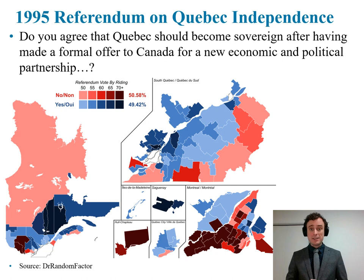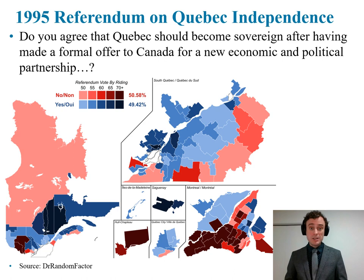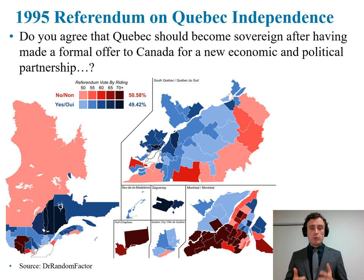The 1995 referendum on Quebec independence posed the following question to Quebecers: Do you agree that Quebec should become sovereign after having made a formal offer to Canada for a new economic and political partnership? The vote was extremely close, with the no vote coming in at 50.58% compared to a yes vote of 49.42%. This was much closer than the 1980 referendum, which in its own right was also a close race.